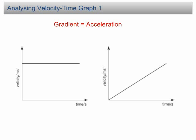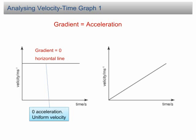The first graph is a horizontal line. The gradient of a horizontal line is zero. Therefore, the acceleration is zero. Zero acceleration means uniform velocity. It means the velocity remains unchanged from the beginning to the end.